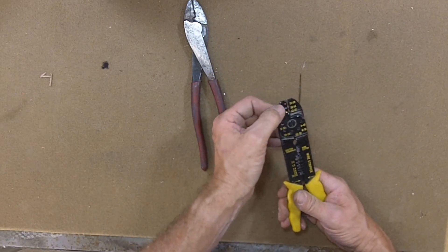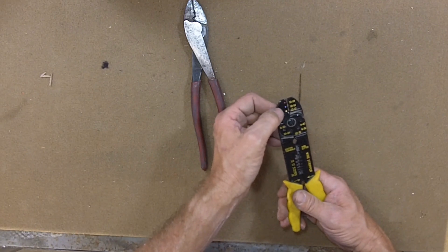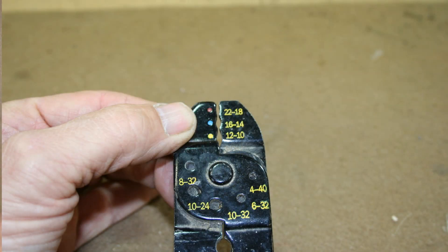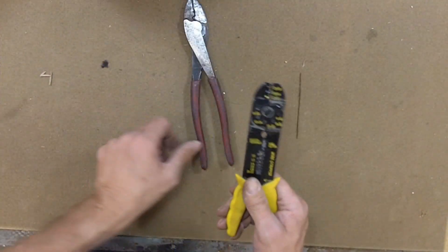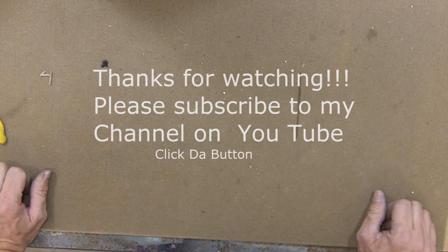Here, it spells out the colors in here, 22 to 18. It's red, 1614, blue, 12 and 10 is yellow. Take a look at that a little bit closer there. So that's just another one. Anyway, we'll move on to the next one now.